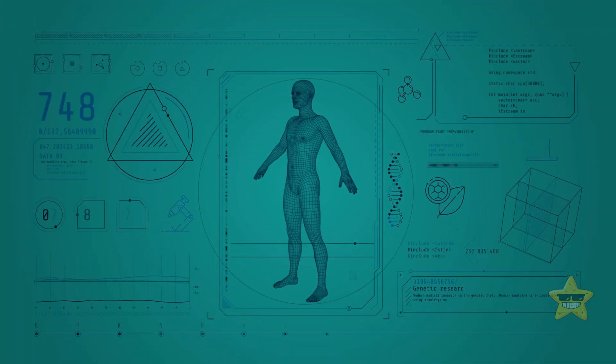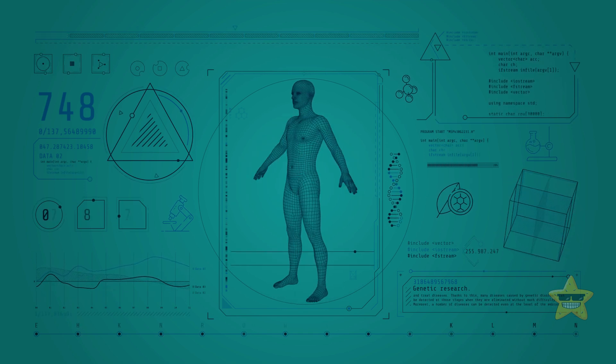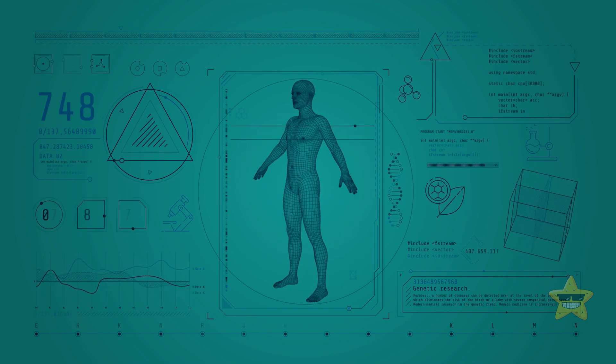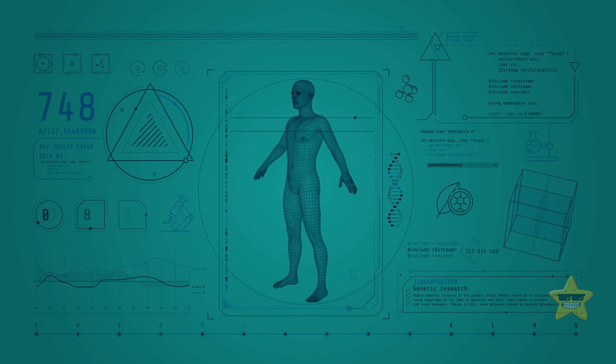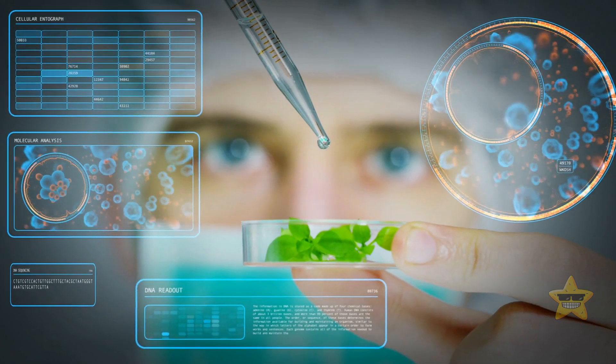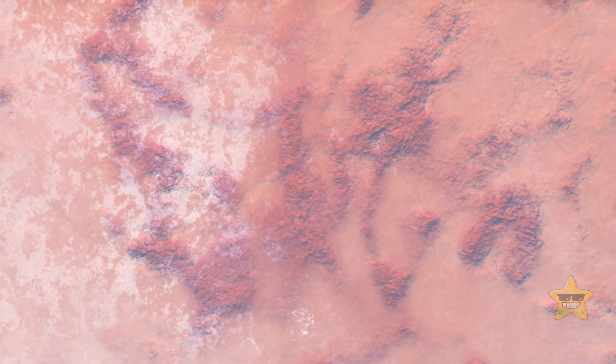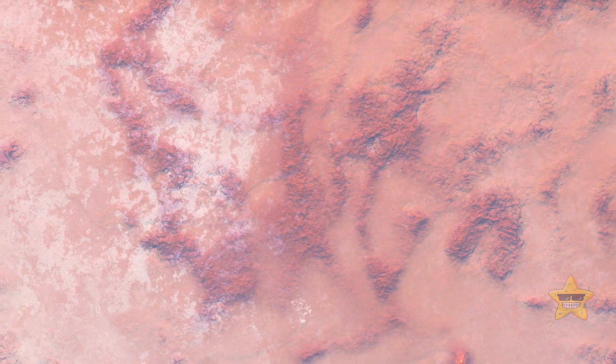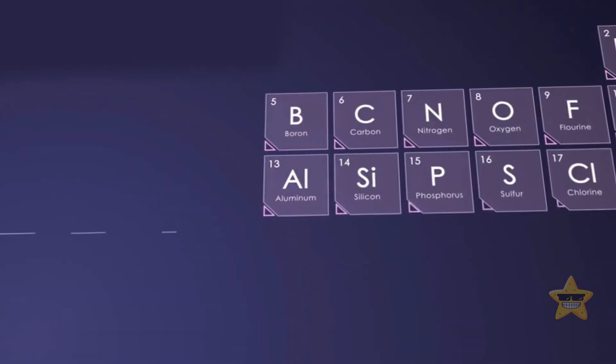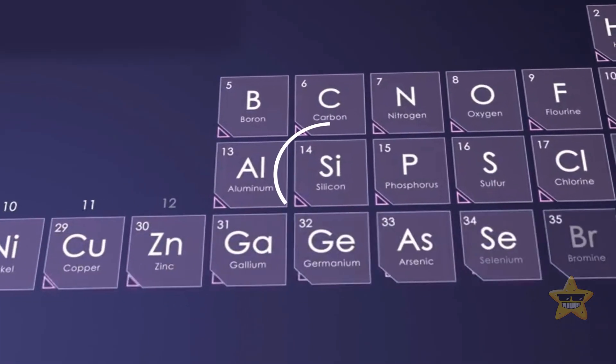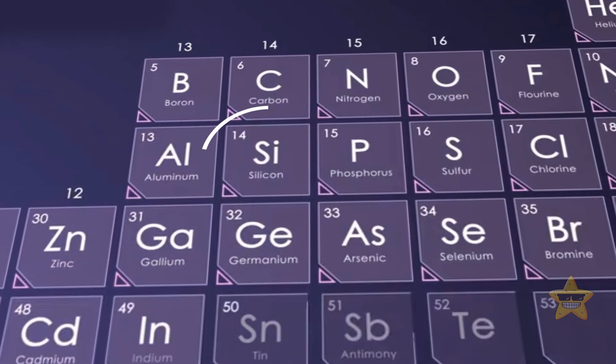But just because you and me are made of carbon and other elements from exploded stars doesn't mean that all life should be. Scientists are open to the idea of alternative biochemistries. There might be non-carbon-based life that we don't know about yet. For example, blobby beings made of silicon compounds. It's carbon's neighbor in the periodic table.